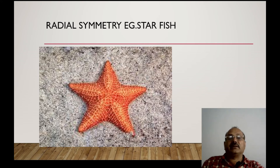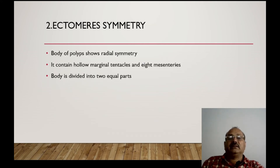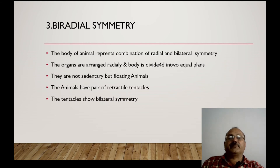For example, starfish. Then ectomeric symmetry — here the body of the polyps shows radial symmetry. It contains hollow marginal tentacles and eight mesenteries. The body is divided into two equal parts.